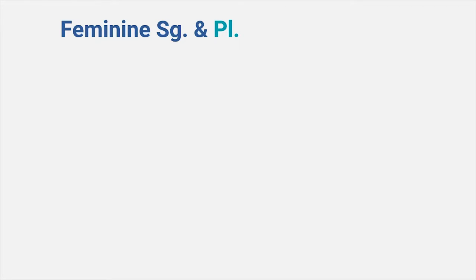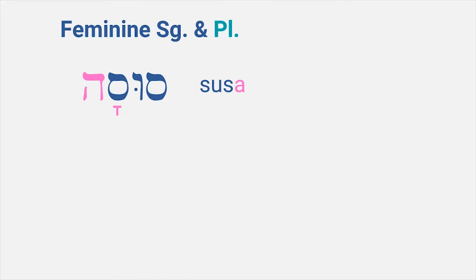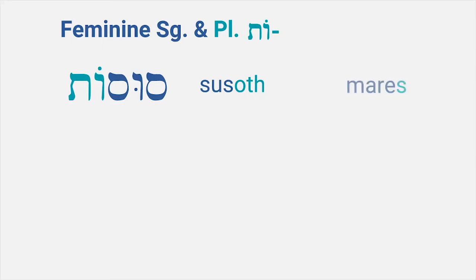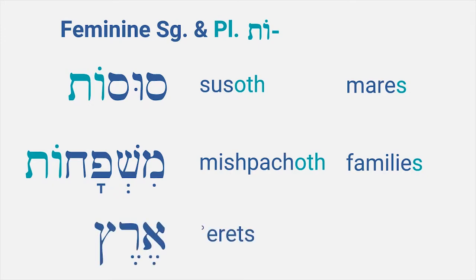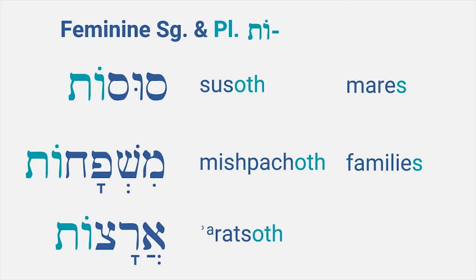So what about feminine words? A typical feminine word ends with -ah: a kamets under the last letter followed by a he. Like susah, mare. The first thing you do is take away the -ah ending and replace it with -oth, so you get susoth, mares. Or mishpacha, family — take away the -ah, add -oth, and you get mishpachoth, families. And just as with masculine words, feminine words sometimes change their vowels too. Like with eretz, land — here we don't take away an -ah ending, so we just add -oth at the end and get aretzoth. Those are all the basic rules for recognizing masculine and feminine plurals, shown here in a table.